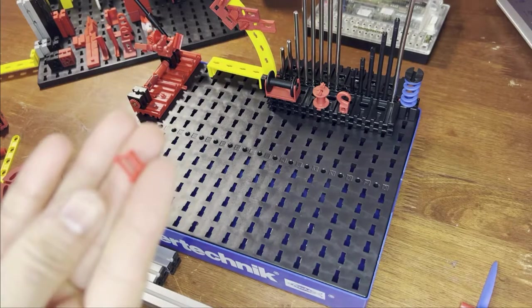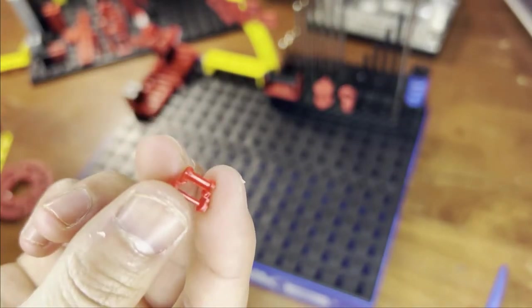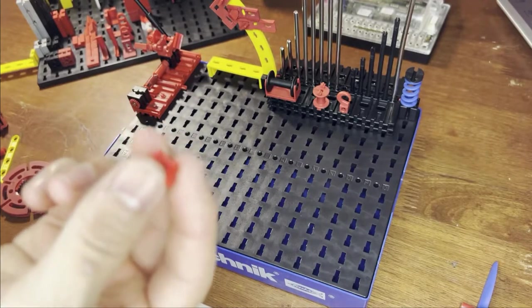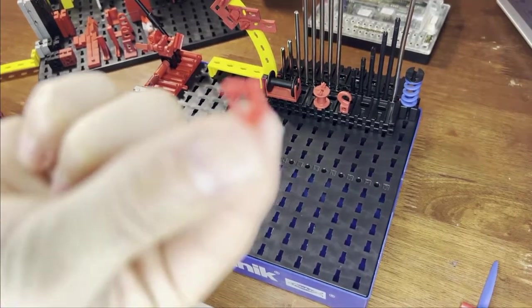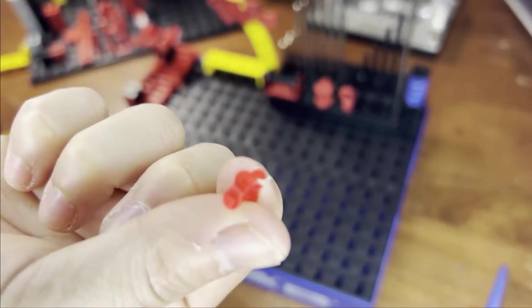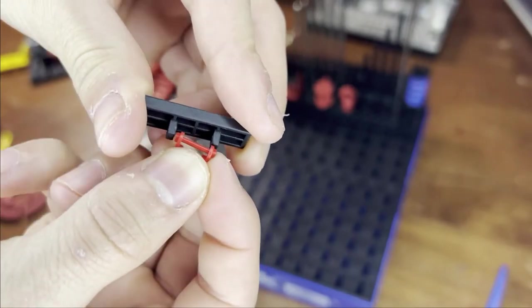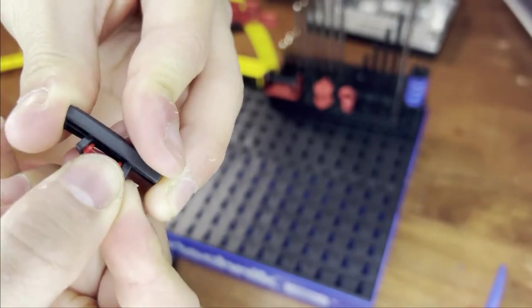Now, there's also chains and chain links. Unfortunately, I only have one of them to show you. But what you can do with these is you can attach multiple of these together to form full chains. And then you can even put treads on them. But hopefully I'll be able to show you these in a different video when I actually have multiple of them.